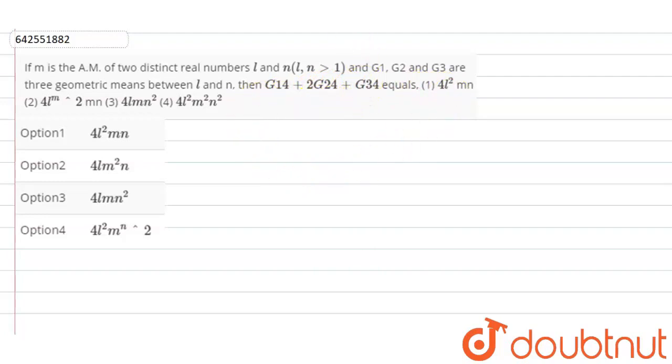So first of all, m is equal to l plus n divided by 2. Now, l, g1, g2, g3 and n are in GP. Therefore, r is equal to n upon l to the power 1 upon 4.